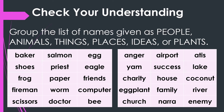For the first group, we have: baker, salmon, egg, shoes, priest, eagle, frog, paper, friends, firemen, worm, computer, scissors, doctor, and bee.